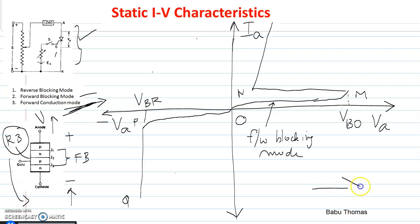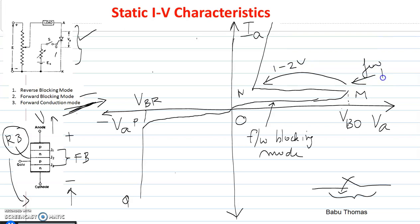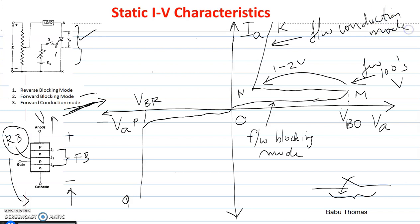I will name the lower point as N, and the device which was acting like a switch — open until point M — now at point M it reaches the breakover voltage VBO and the switch goes to a closed condition. The voltage across the device reduces from hundreds of volts to 1 or 2 volts. The device has now gone to the conduction state, named point K. From M to N the device goes from the off state to the on state, and from N to K it is the forward conduction mode.